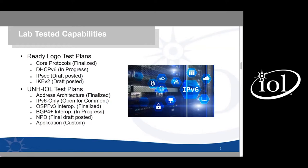DHCPv6 is in progress — updates were needed to both the test suites and many of the automated test scripts. IPsec and IKEv2 drafts have been posted and testing will be available very soon. There are also test plans outside the IPv6 Ready Logo program included in USGv6 under their own capabilities: address architecture, which has been finalized, IPv6-only, OSPFv3, and BGP. OSPFv3 has been finalized and testing is recently available, and BGP4+ is coming up very soon.